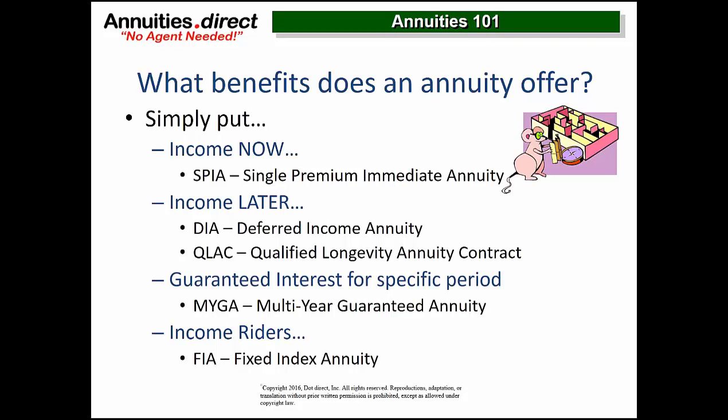The simplistic products — SPIAs, DIAs, QLACs, and MYGAs — have no moving parts, no market attachments. If Warren Buffett ever bought an annuity, he'd buy these because you can explain them to a 9-year-old. Indexed annuities have 792 indexed option choices and over 45 different indices — good luck with that dart throw. At the end of the day, you'll get around 3% if all the planets align; you'd be better off buying a MYGA. We hold our nose and use indexed annuities only as a delivery system for income riders when they beat a deferred income annuity on contractual guaranteed numbers.